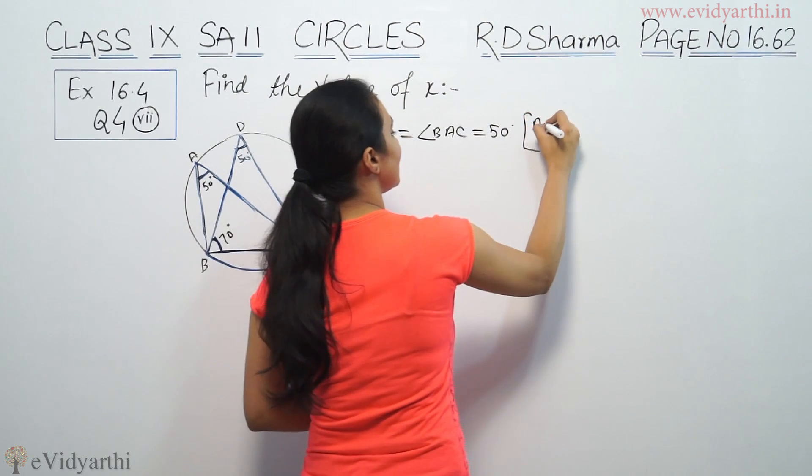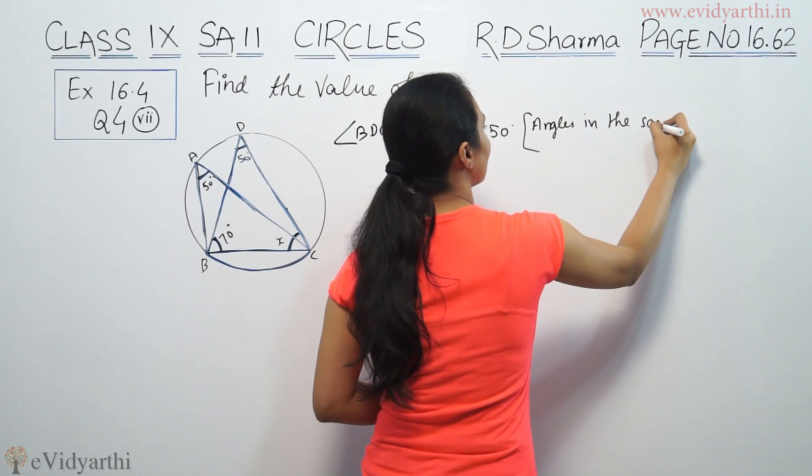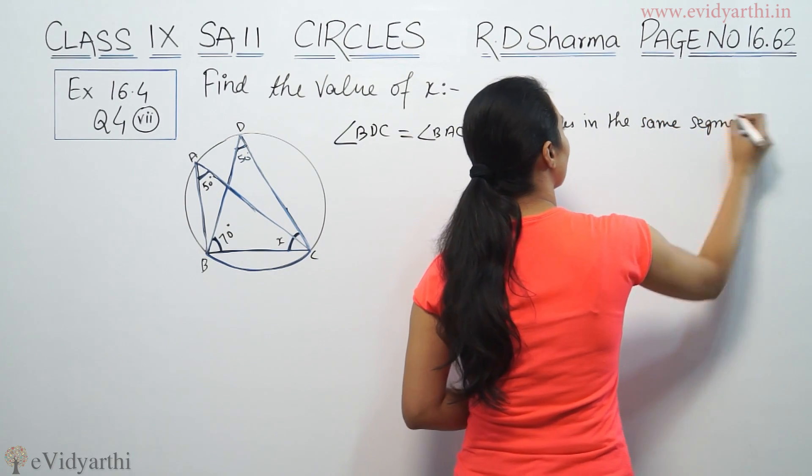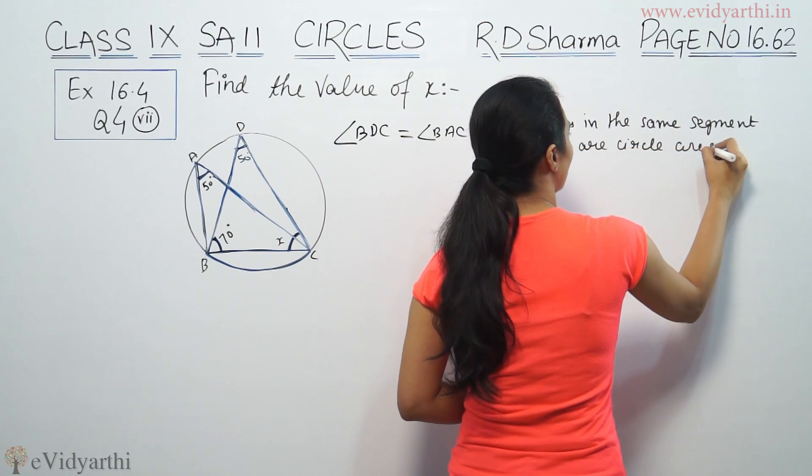The reason: angles in the same segment of a circle are equal.